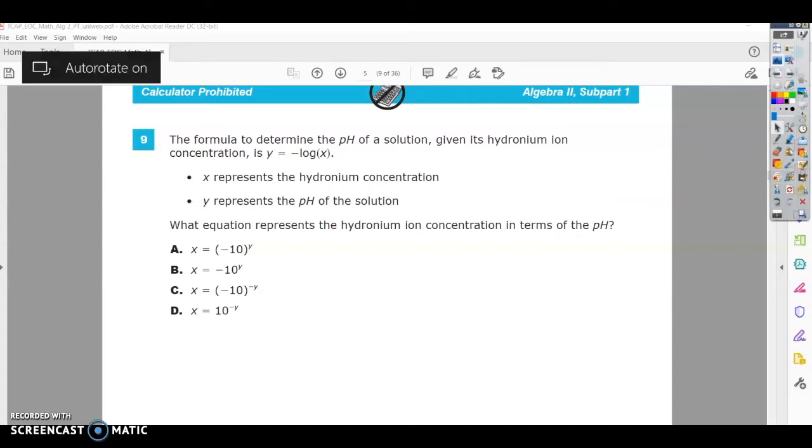The formula to determine the pH of a solution, given its hydronium ion concentration, is Y equals negative log of X. X represents the hydronium concentration, Y represents the pH of the solution.